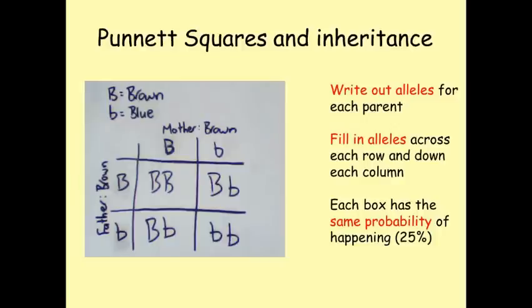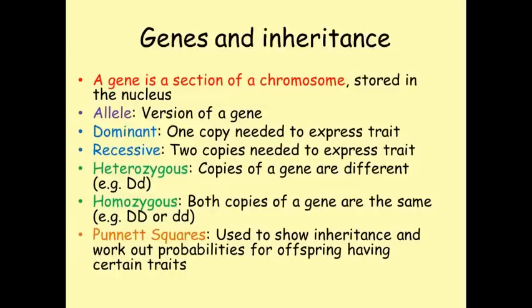Inheritance can be understood by studying genetics. Genes are found on chromosomes inside the nucleus of cells. An allele is a version of a gene, and each person has two copies of each gene. If the alleles are the same, we say they're homozygous; if the versions are different, we say that they're heterozygous. If an allele is dominant, we use a capital letter to write it down, and you need only one copy to express the trait. A recessive trait is shown using a lowercase letter, and two copies are needed to express it. Your genotype is the combination of alleles you have, and your phenotype is your physical characteristic. Inheritance is shown using Punnett squares, where we can calculate the probability of an offspring having a specific trait if we know the genotype of the parents.